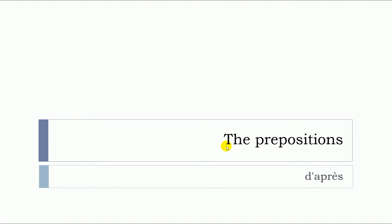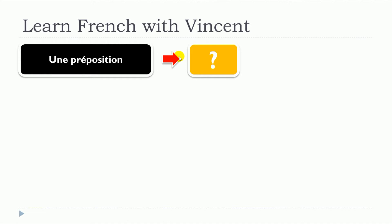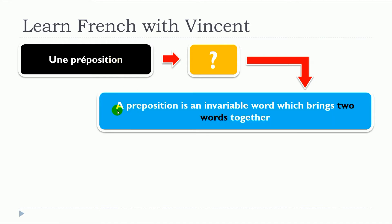In this lesson, we will see together the prepositions, but more precisely, d'après. The first thing that we need to see together is what is une préposition. A preposition is an invariable word which brings two words together.